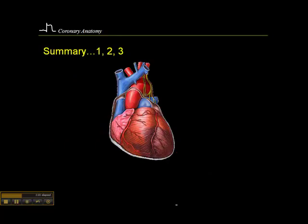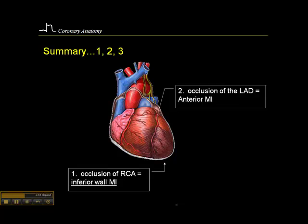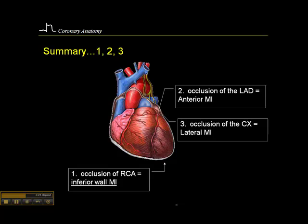In summary, in about 80 to 90% of the population: if the patient occludes the right coronary artery, they'll have an inferior wall MI; if they occlude the LAD, they'll have an anterior wall MI or anterior lateral wall MI; and if they occlude the circumflex, they'll have a lateral wall MI. The final caveat is that if the patient is left dominant and the circumflex feeds the inferior wall, occlusion of the circumflex will produce an inferior lateral wall MI.